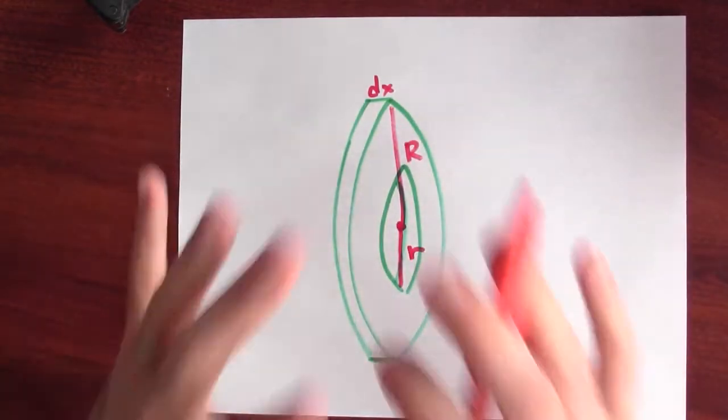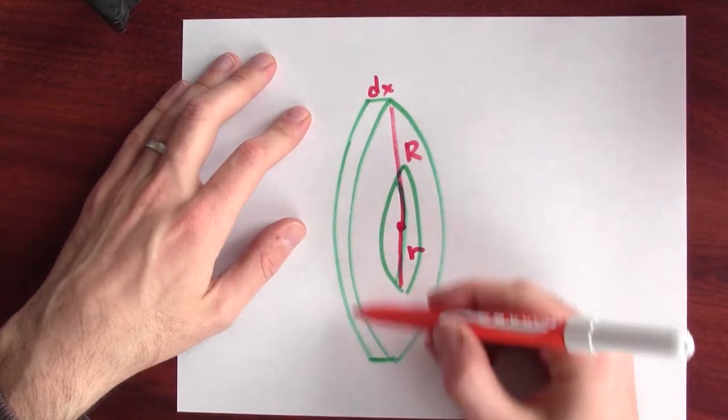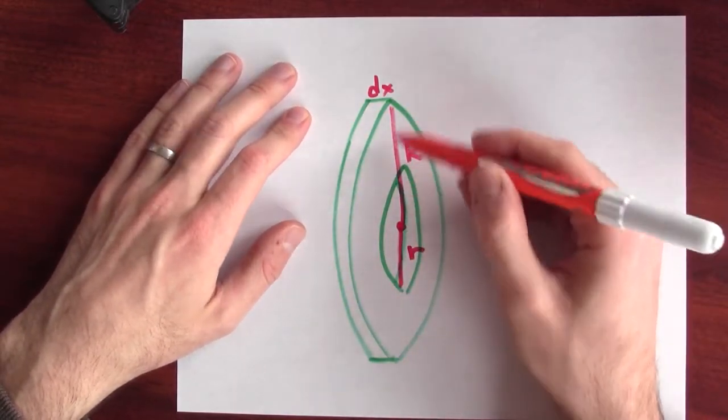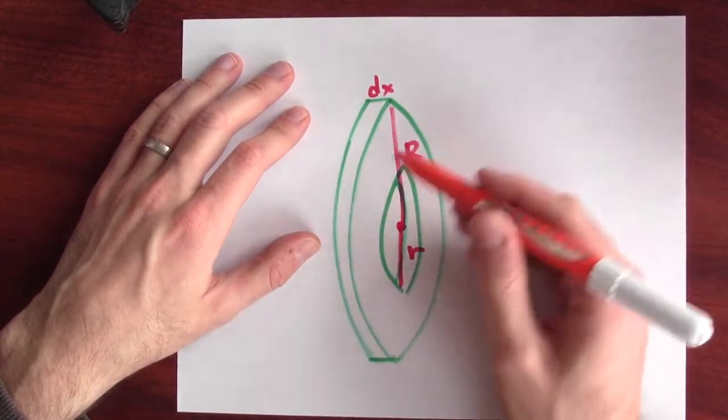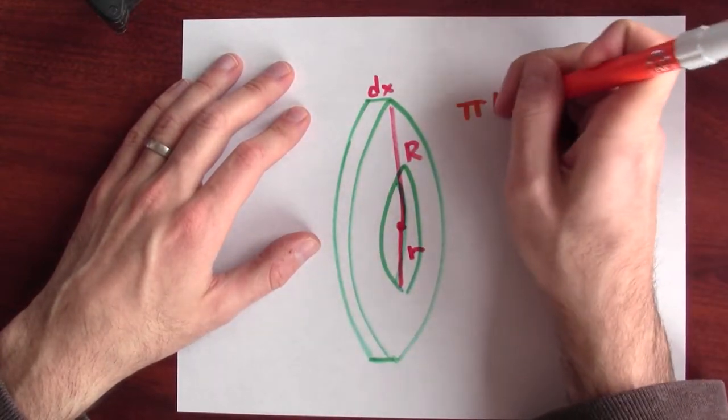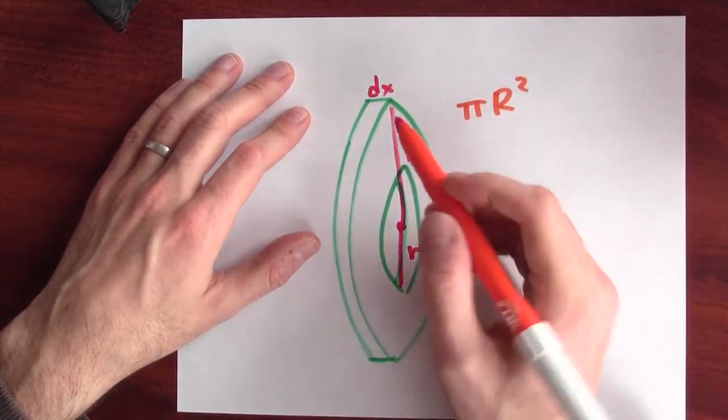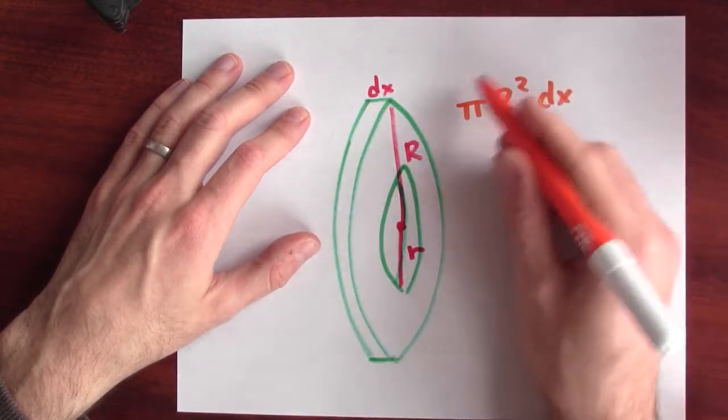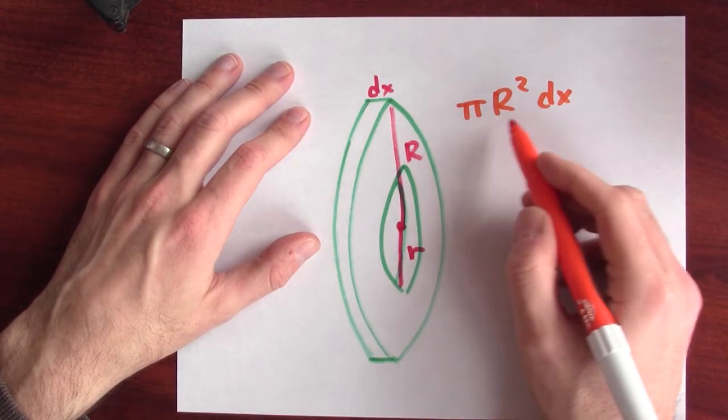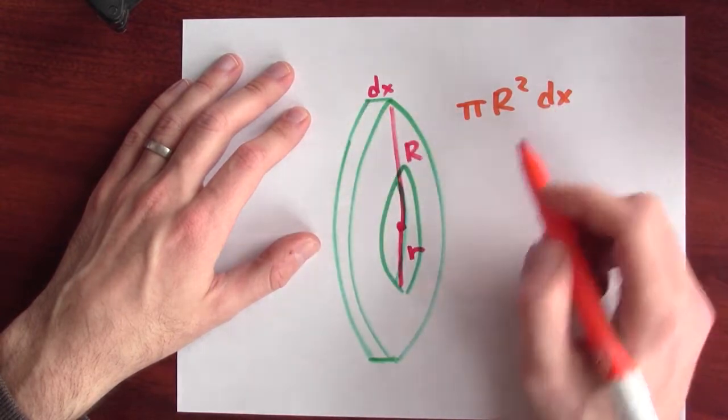Now, if I were just thinking about the whole cylinder of radius big R, I'd know the volume of that. The area of a circle of radius big R is π big R squared. So if I thicken that up, the volume of a cylinder of radius big R is π big R squared, and the thickness here is dx.